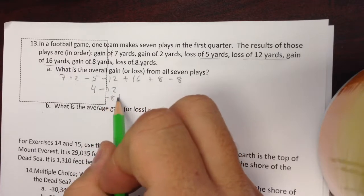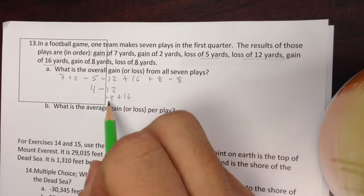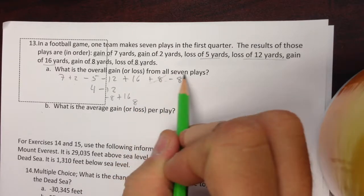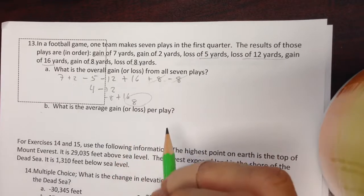Negative 8 plus 16 is 8. And then plus 8 minus 8, those here just cancel out, so I have 8.